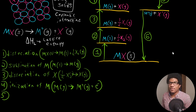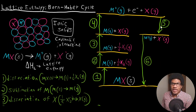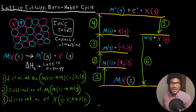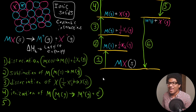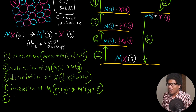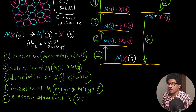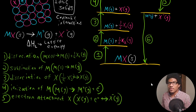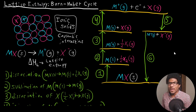Step five: the metal is still the cation — so M+ remains the same. What's happening here is the electron is being added to the halogen. We're going from a neutral X to X with a negative charge, meaning that free electron is being added to X. So step five is the electron attachment of X: X gas plus the free electron gives us X minus.